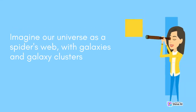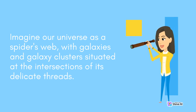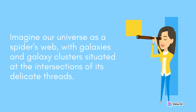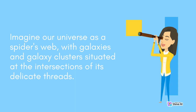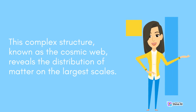Imagine our universe as a spider's web, with galaxies and galaxy clusters situated at the intersections of its delicate threads. This complex structure, known as the Cosmic Web, reveals the distribution of matter on the largest scales.